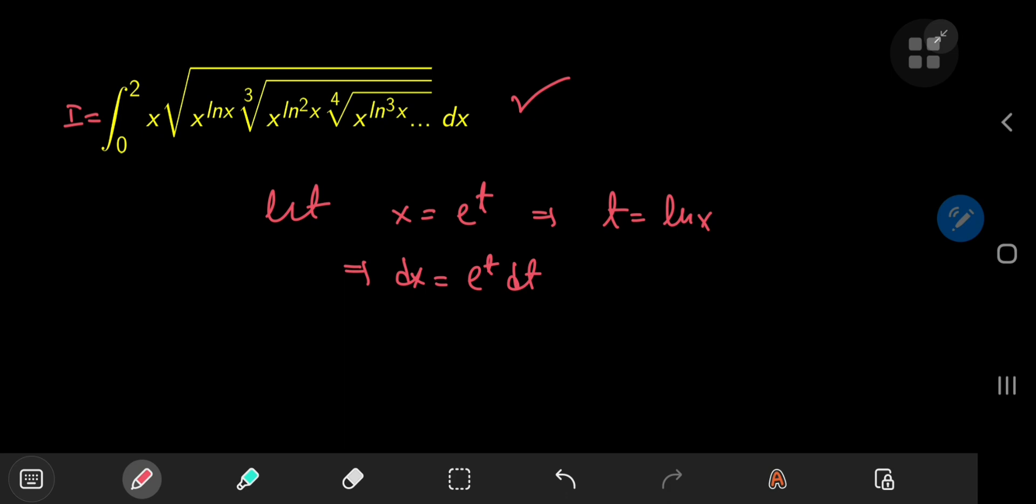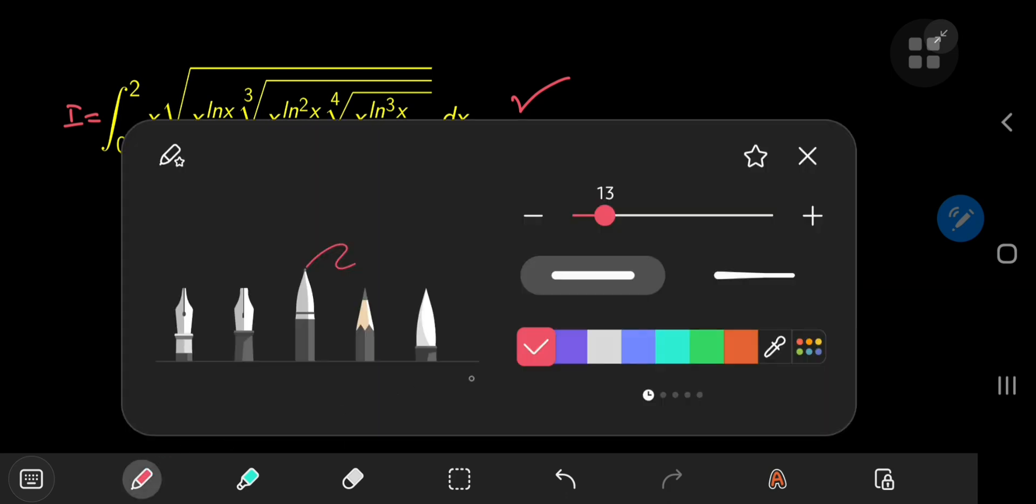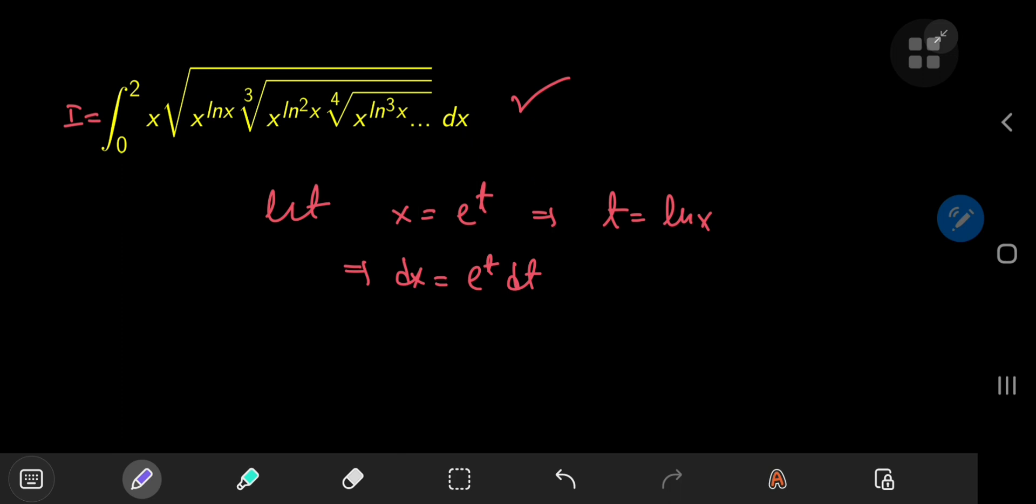Now, how does this transform the limits of integration? Well, for x to approach 0, we need t to approach negative infinity. And for x to approach 2, we need t to approach the natural log of 2.